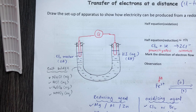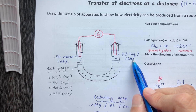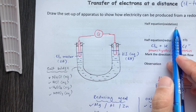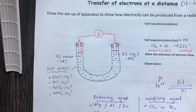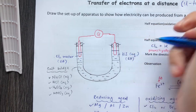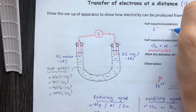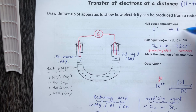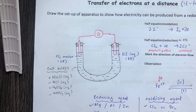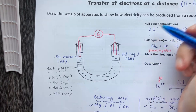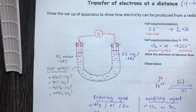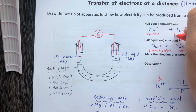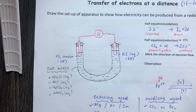For potassium iodide, which is the reducing agent, it undergoes oxidation. For this chapter, ignore potassium — focus on the iodide ion. The half-equation is: 2I⁻ → I2 + 2e⁻. The observation is that the iodide solution, originally colorless (all halide solutions are colorless), turns brown as iodine is formed.